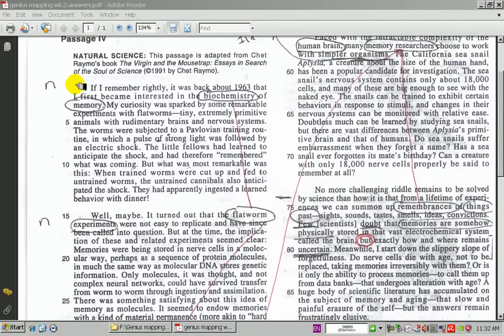Let's take a look at paragraph number one here in passage number four. It says, if I remember rightly, it was back in 1963 that I first became interested in the biochemistry of memory. The main subject here is biochemistry of memory. The verb is became interested. So we know that throughout the passage, we're somehow going to have to be talking about biochemistry of memory. When we come down to paragraph number two, we see that paragraph two's topic sentence says,